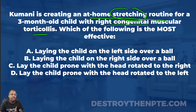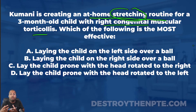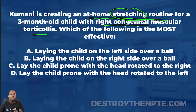When we see right congenital muscular torticollis, it's when the right sternocleidomastoid is tight. So our patient is going to present with right side bend and left rotation — that's exactly how this patient is presenting to us right now: right side bend, left rotation.